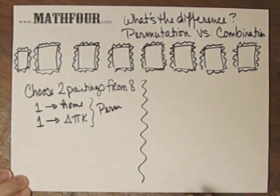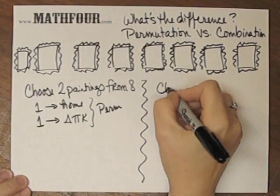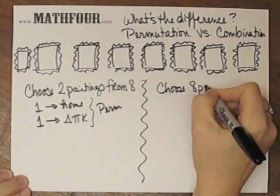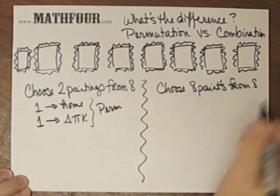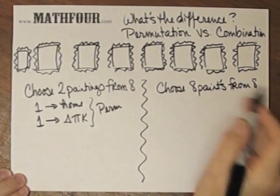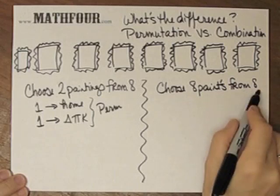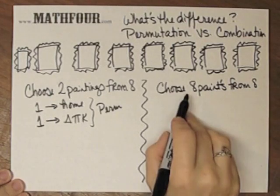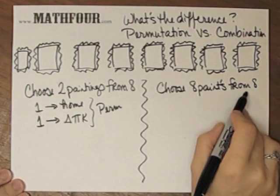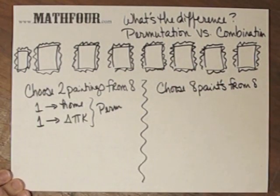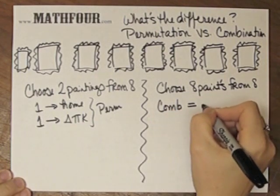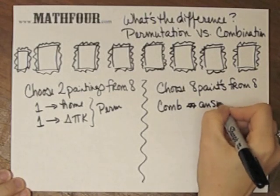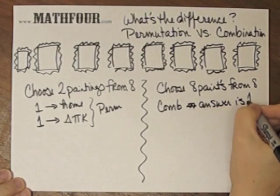Compare that with choosing eight paintings from eight. So as this stands, if this is a combination, how many different ways can I grab eight paintings and put them in my car and take them home? There's only one. So if this is a combination, then the answer is one way.